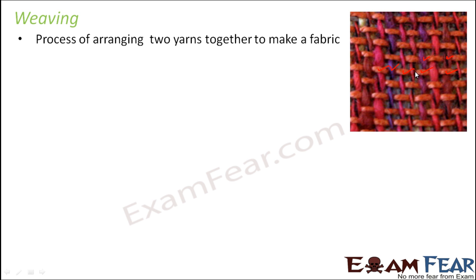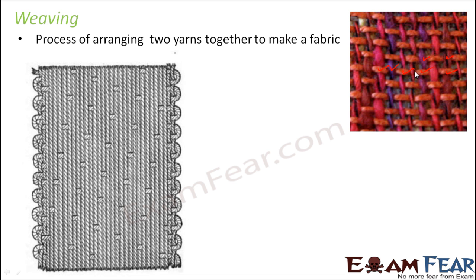When you are able to do this completely, what you get is a fabric. This is how a fabric looks. For weaving to happen, you need two distinct sets of yarns — that is very important. With one yarn you cannot do it.